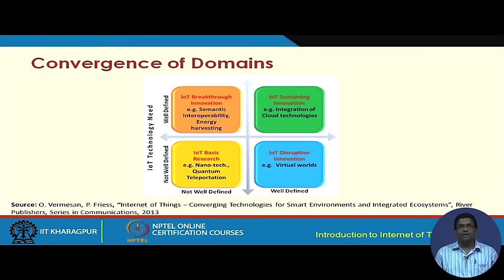Energy harvesting has also been a major research area — harvesting energy through different renewable sources such as wind and solar to power the different nodes in IoT. These are very small, low-powered nodes with very limited power, so energy harvesting plays a crucial role in the sustenance of these networks.